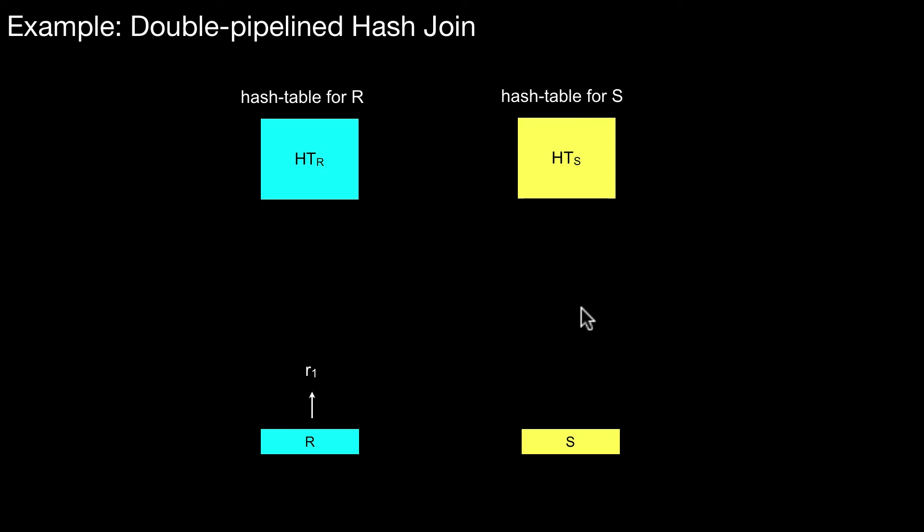A double-pipelined hash join is an interesting variant of a simple hash join. Here what you do is you keep two hash tables in main memory, one for input R, one for input S, and then you input into the hash tables and probe from those two bits without exhausting one of the inputs first.